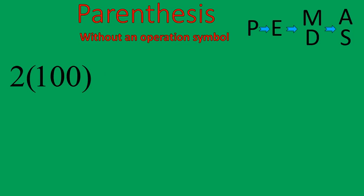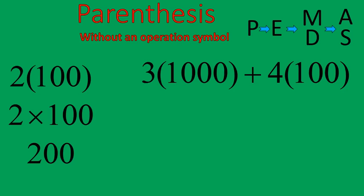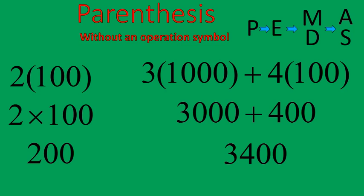Now there are some situations where you get a parentheses and there's no symbol. Like this. 2 and 100. Whenever there's no symbol given, it means multiplication. That's the same as saying 2 times 100, which will give us 200. Here's another example. 3 times 1,000 plus 4 times 100. I'll just do the multiplication there. That means 3,000 plus 400. Or in other words, 3,400.